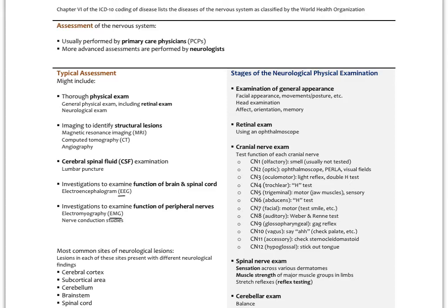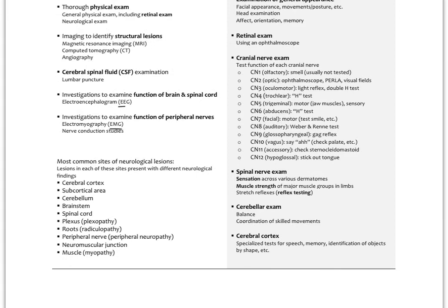The most common sites of neurological lesions are anywhere along the neurological tract — distinct regions like the cortex, subcortical areas, limbic system, cerebellum, and brainstem. Lesions could affect the spinal cord, the spinal nerve roots, and plexuses formed from those roots — called plexopathy. If a vertebra compresses a nerve root, that's radiculopathy. A problem in the peripheral nerve is peripheral neuropathy. A problem at the neuromuscular junction, where nerve connects with muscle, or in the muscle itself is a myopathy. Neurological disorders require pinpointing where the lesions are.